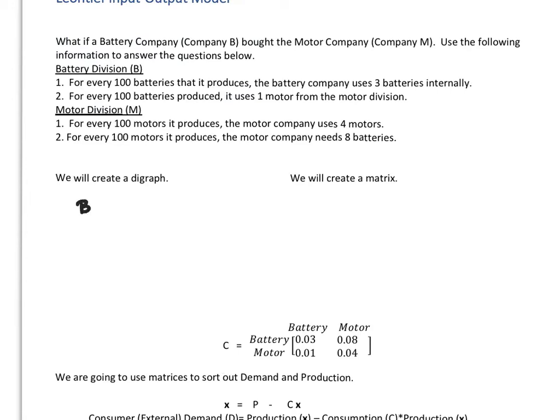So I'm going to have my batteries, and then I'm going to have my motors. And then from the batteries to the batteries, if you read this again, we're going to use 3% internally. So that means that I'm going to go from batteries to batteries on 3% of what we have.